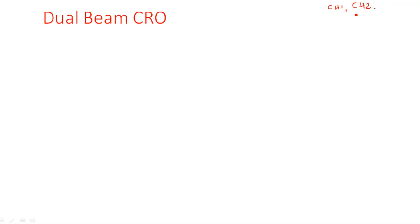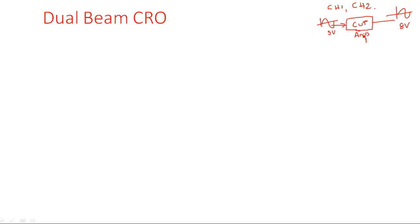Generally, when using a CRO in the laboratory, there are two channels: channel one and channel two. Suppose you have a circuit under test — say an amplifier — with an input voltage of 5 volts and an output sine wave of 8 volts. That means two signals need to be observed at the same time. In such cases, we use both channels to observe the input and output waveforms in parallel. This is the use of dual beam CRO: two beams.